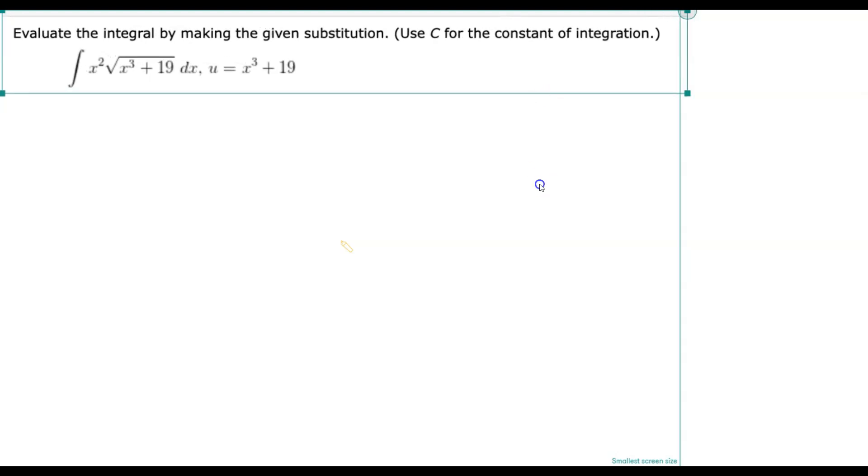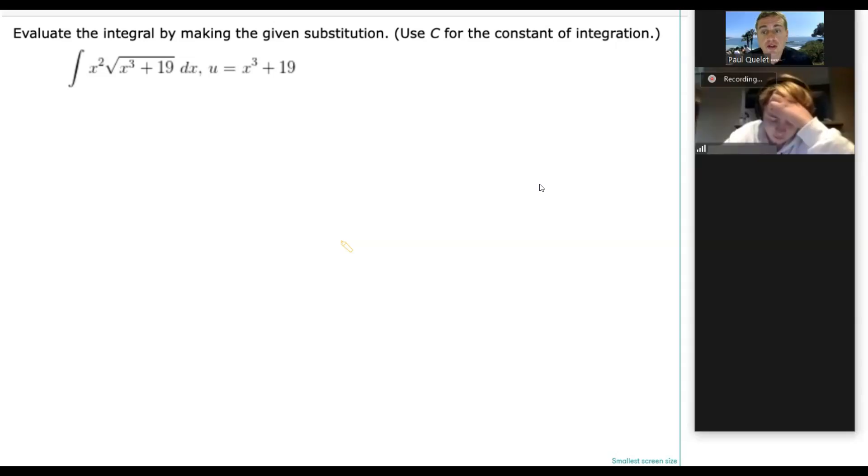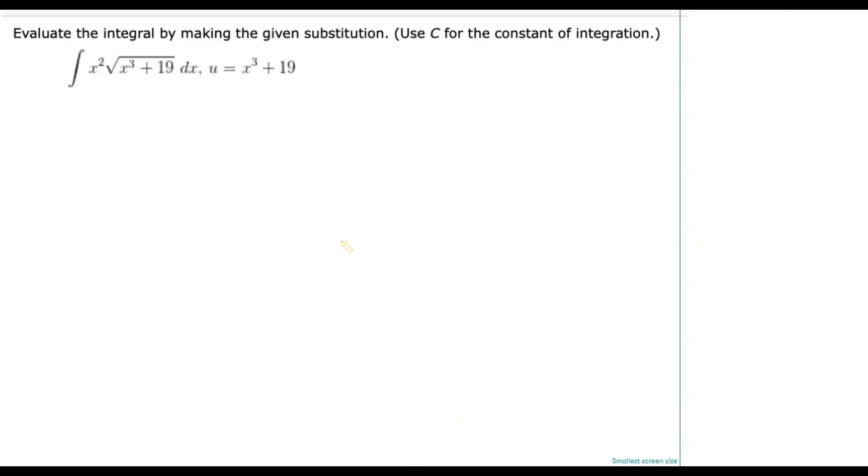Okay, so it says evaluate the integral by making the given substitution. Use C for the constant of integration. So here's the deal—in this case they actually give you what u is. So why don't you give this one a try? You try writing it because you've already seen me kind of demonstrate, but especially given that they gave you u, go ahead and try to walk through the process.